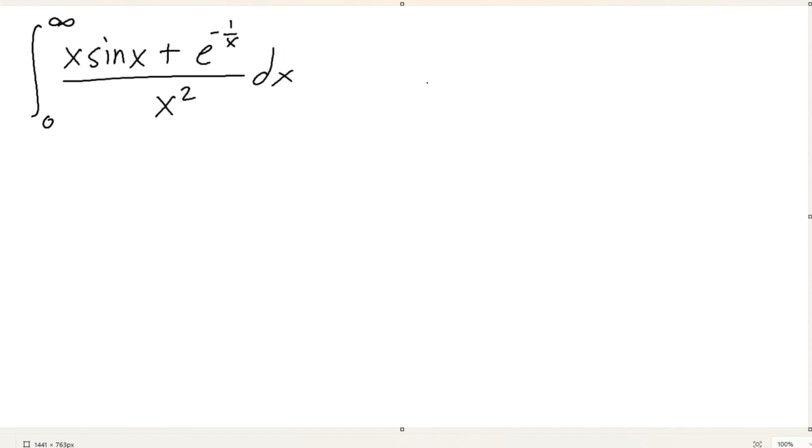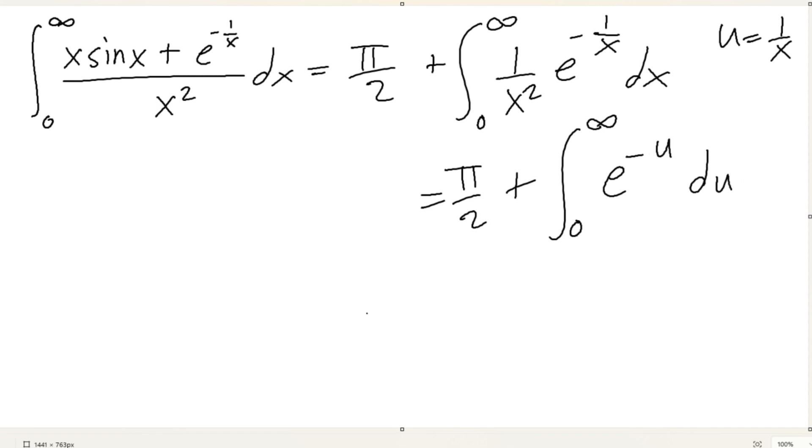Oh god, what is this? All right, let's calm down and just see what's going on. So I see in this term, this is just a Dirichlet integral. And then here, this looks like a basic u substitution. If u equals 1 over x, this is going to be pi over 2 plus 0 to infinity of e to the negative u du. I believe this is just pi over 2 plus 1.